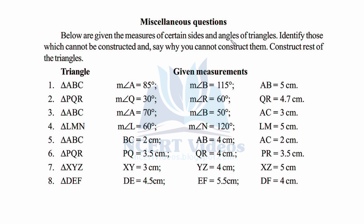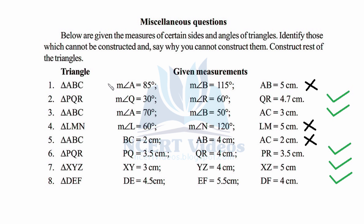Here we have a miscellaneous question: given measures of certain sides and angles of triangles, identify those which cannot be constructed and say why, then construct the rest. For the first triangle ABC, angle A is 85 degrees and angle B is 115 degrees. Adding these two gives 200 degrees, which exceeds 180 degrees — the sum of all three angles in a triangle — so this triangle is not possible.